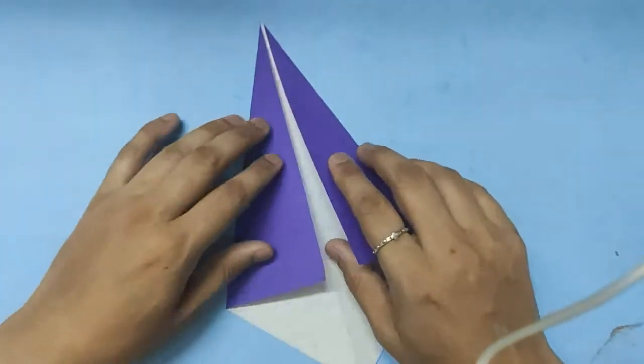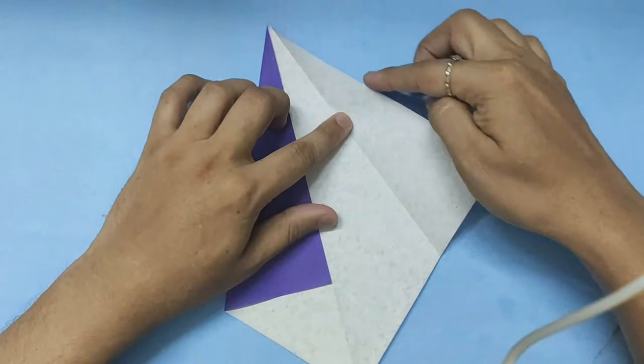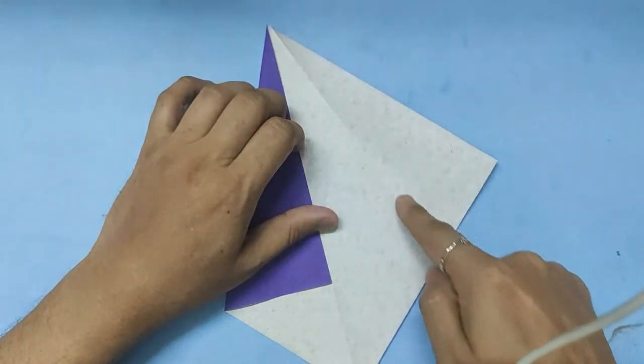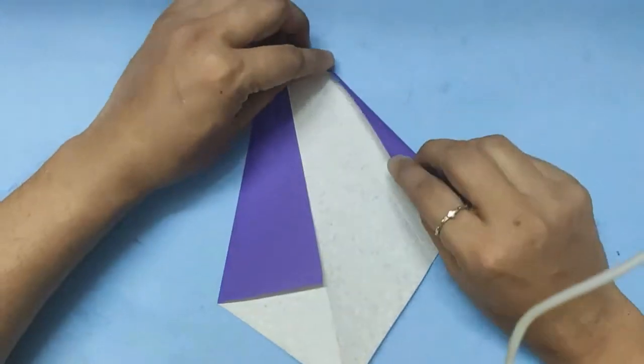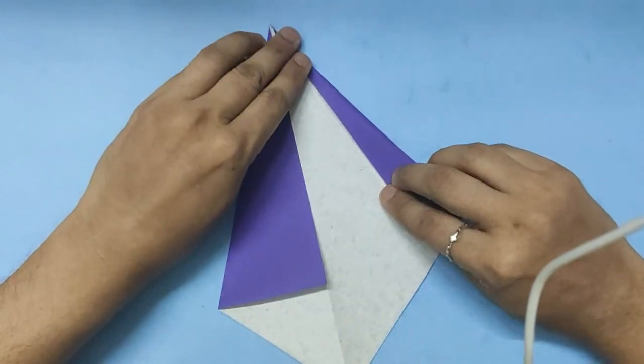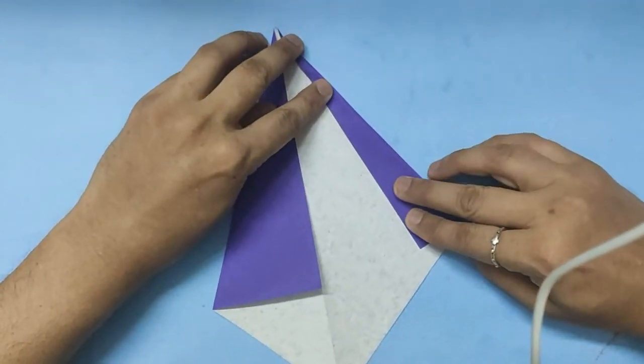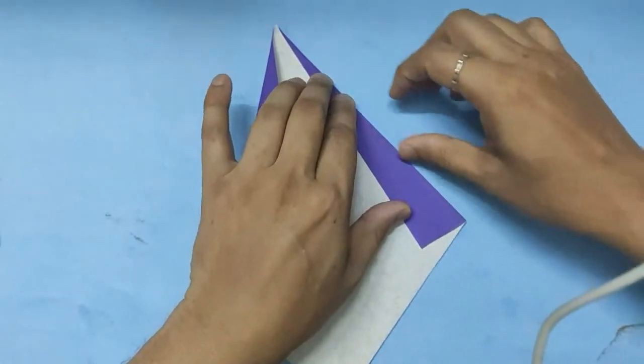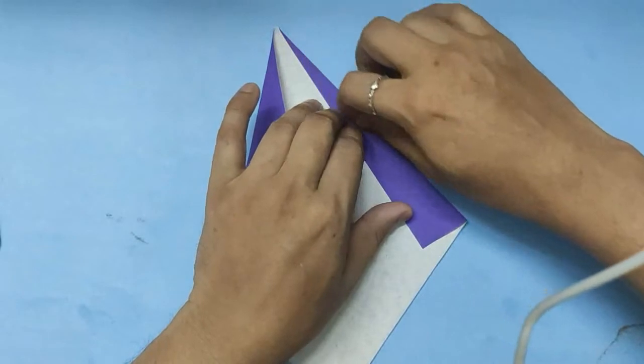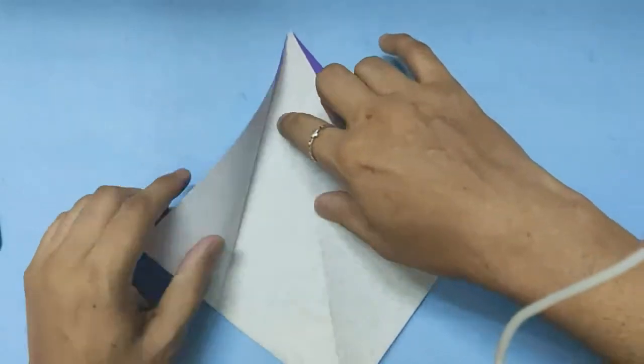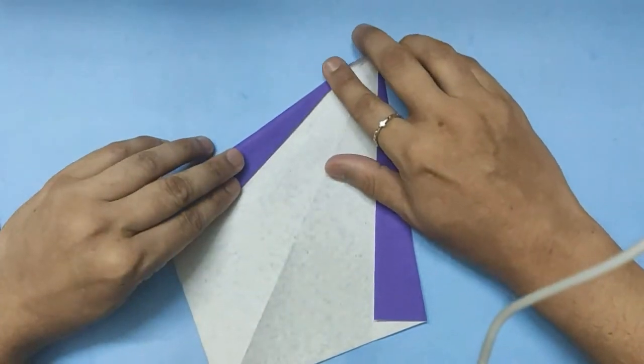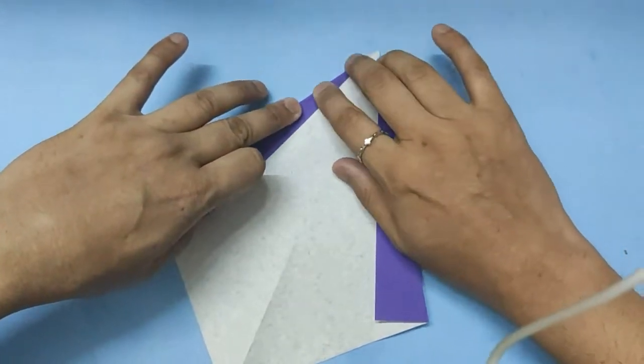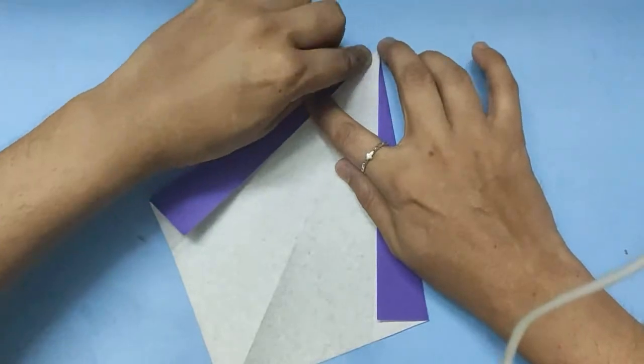We will open it, bring the outer edge to this fold line. It's actually a 22 and a half degrees fold. We will do the same on the other side, bringing it to the 22 and a half degrees.